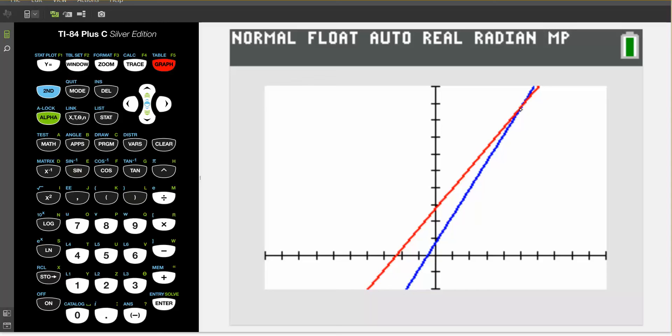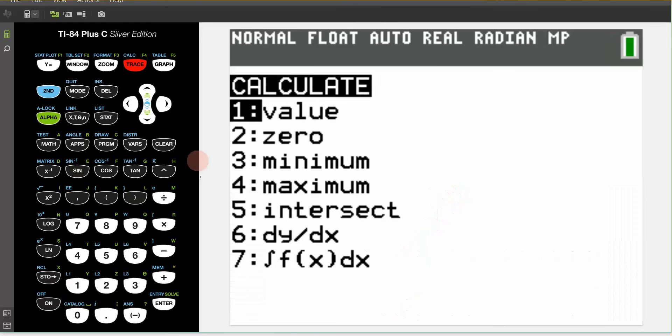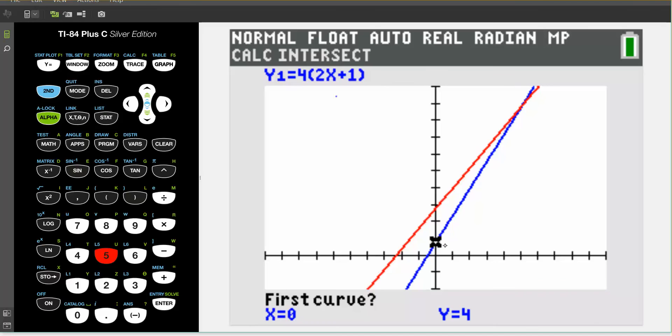So you can see here that my two lines are intersecting at some point. In order to verify that they intersect at an x value equal of five, we're going to go ahead and we're going to find what the intersection of these two lines are. So we do that by doing second, trace, choose intersection, which is option number five. It's flashing on the blue line, so I say yes, that's the first curve. It's on the red line, yes, that's the second curve. I don't have a guess,